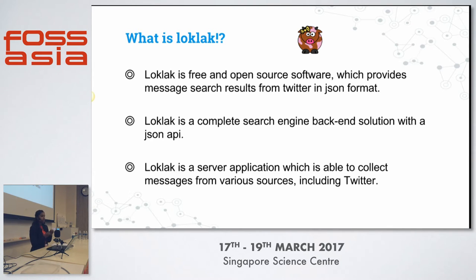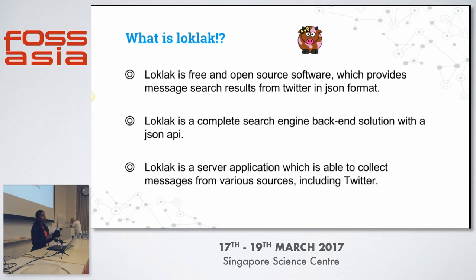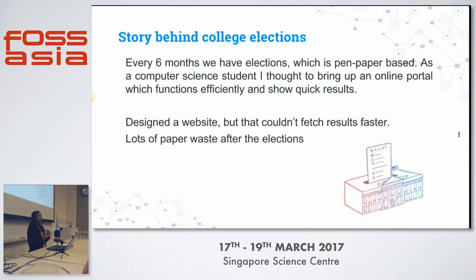LokLok is a free and open-source software that provides message search results from Twitter in JSON format — very fast and efficient in fetching data. It also maintains anonymity. For example, if you want to build something using Twitter data, you normally need an OAuth authentication account, and your credentials and IP address are exposed. LokLok solves this by building the back-end for you, keeping your IP address undisclosed.